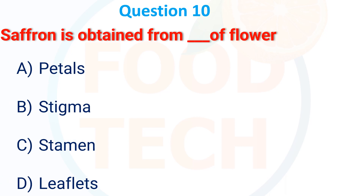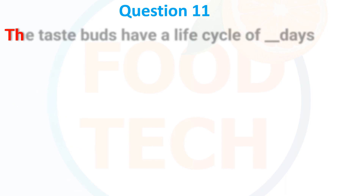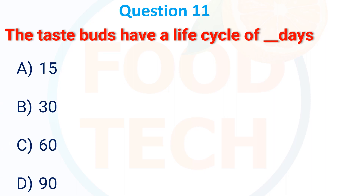Saffron is obtained from which part of the flower? A) petal, B) stigma, C) stamen, D) leaflet. The answer is B — stigma. The taste buds have a life cycle of how many days? A) 15, B) 30, C) 16, D) 19. The answer is A — 15 days.